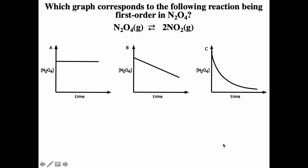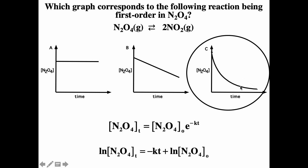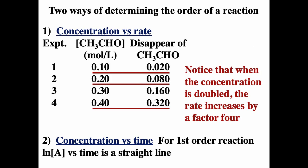A simple question: which graph corresponds to the following reaction being first order? Remember, concentration as a function of time should be exponential, so the answer is graph C. There are two ways of determining the order of a reaction: looking at how the initial rate changes with initial concentration — here concentration doubled and rate quadrupled, so it's second order — or looking at whether the natural log as a function of time is a straight line (first order) or 1/[A] as a function of time is linear (second order). I hope that helps.